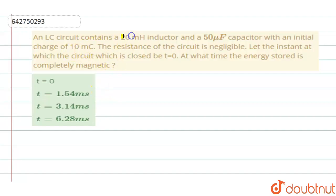An LC circuit contains a 20 mH inductor and a 50 mF capacitor with an initial charge of 10 mC. The resistance of the circuit is negligible and at the instant in which the circuit closed is T equals 0, at what time the energy stored is completely magnetic?